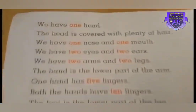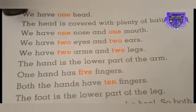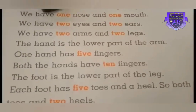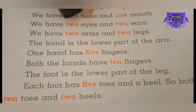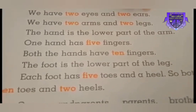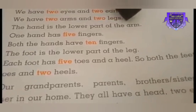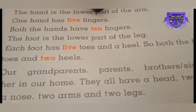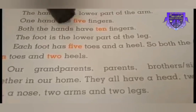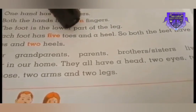Turn your page and see here. We have one head, and our head is covered with plenty of hair. We have one nose and one mouth. We have two eyes and two ears — you can see with your eyes and hear with your ears. We have two arms and two legs. One hand has five fingers, so both hands have ten fingers. The foot is the lower part of the leg; each foot has five toes and a heel, so both feet have ten toes and two heels.